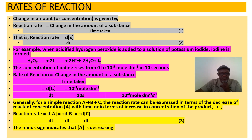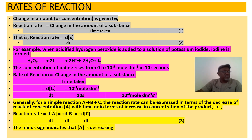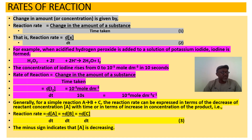To illustrate, consider an indomie-eating competition where two or three students are given the same quantity of indomie and told to finish it within a certain period of time. We are talking about the rate of consumption — the person who finishes in the shortest possible time has consumed that quantity fastest.